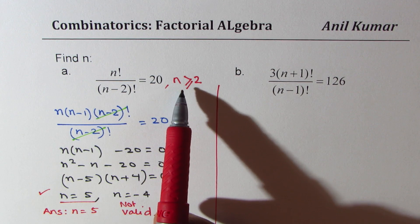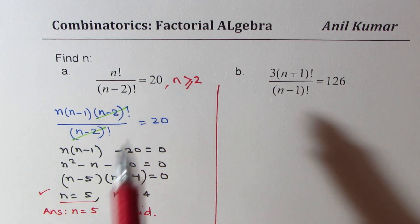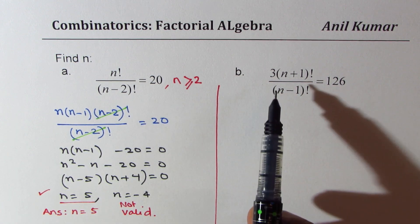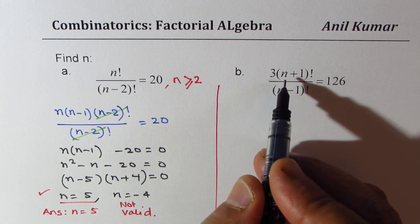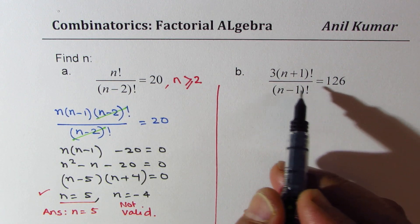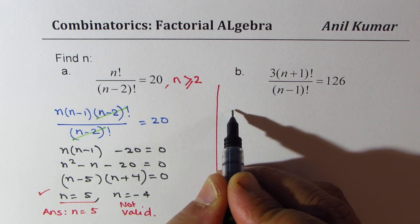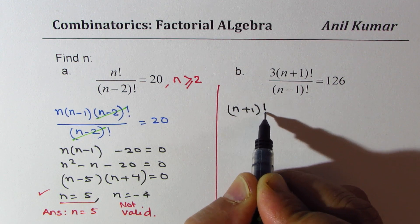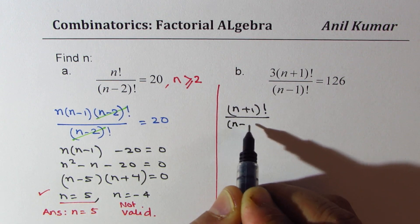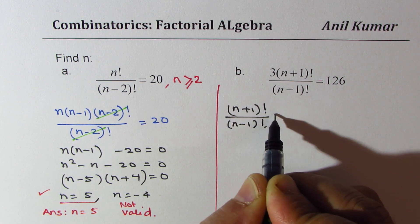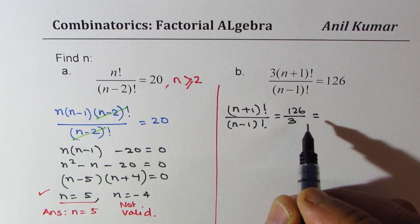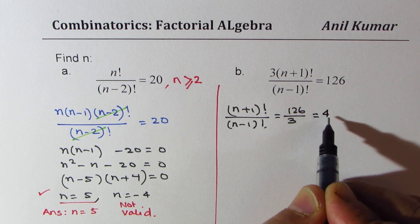This is very important to understand how we should check what is permitted value. Now, let's do the next question. It is 3 times (n+1) factorial. We could do this with (n+1) factorial over (n-1) factorial equals 126 divided by 3, which is 42.